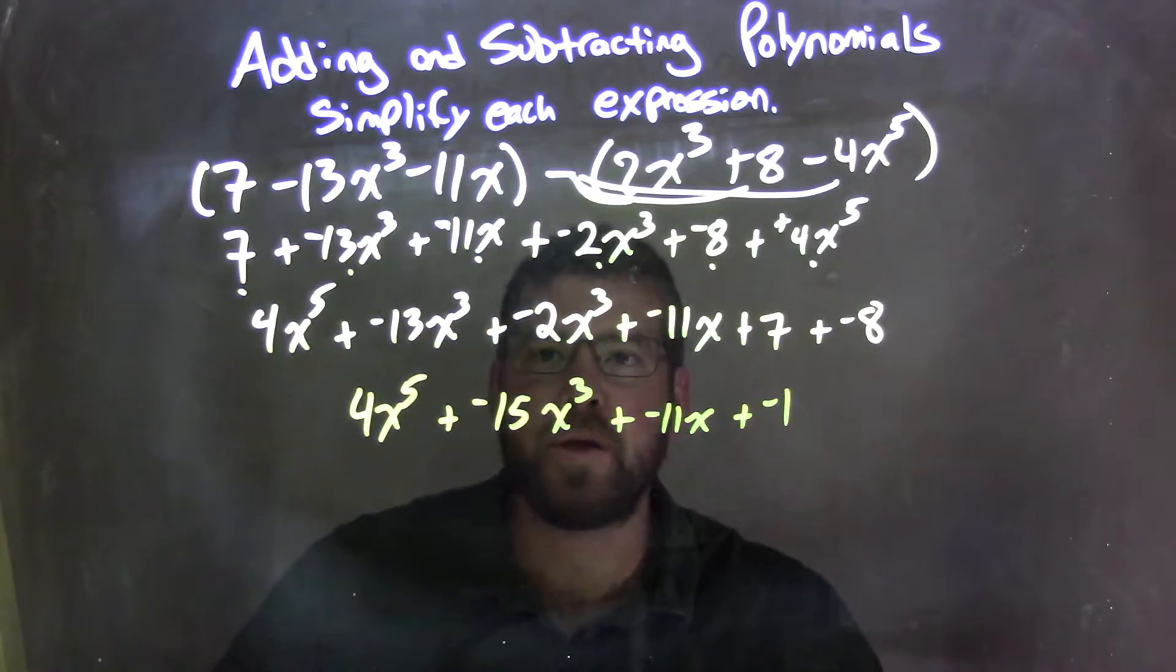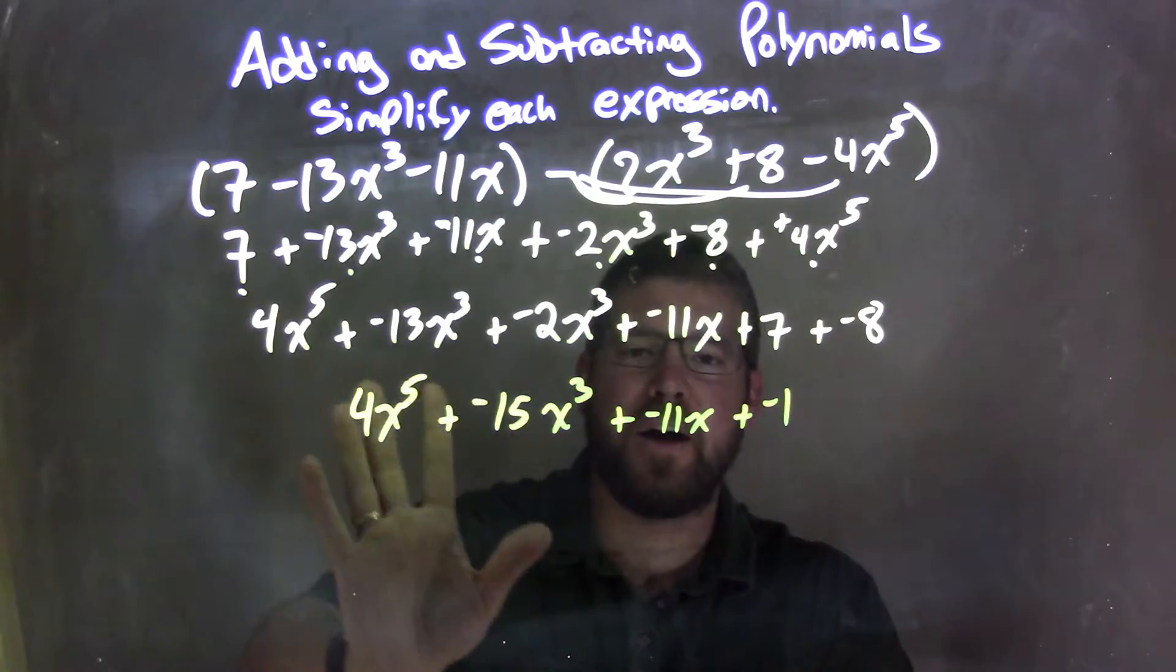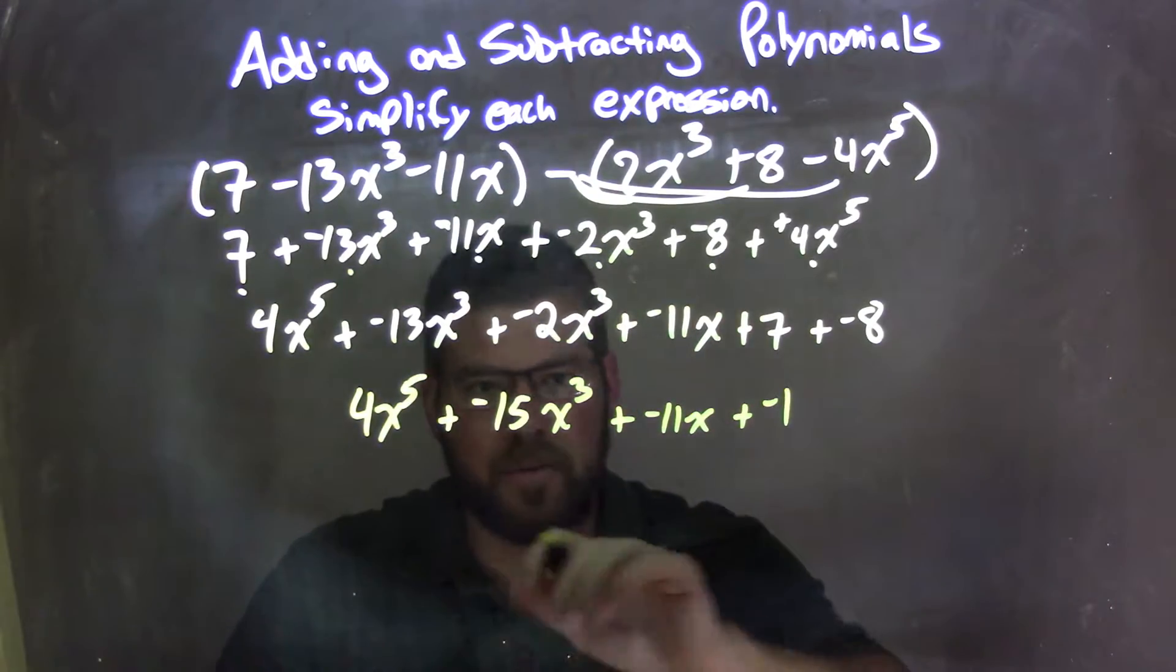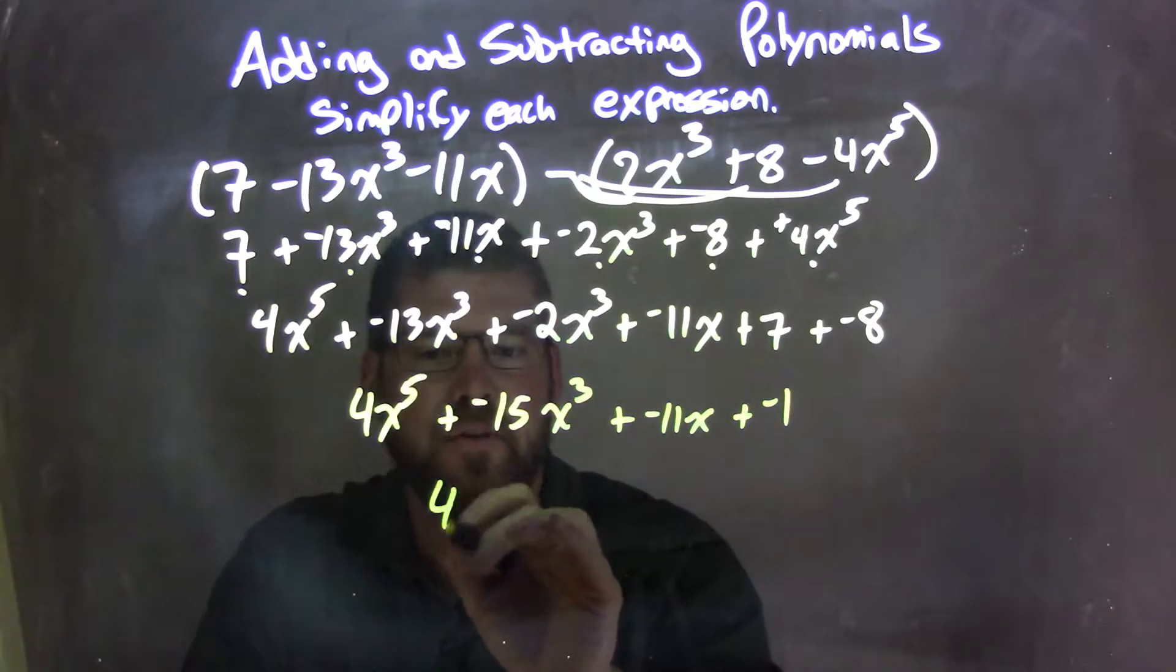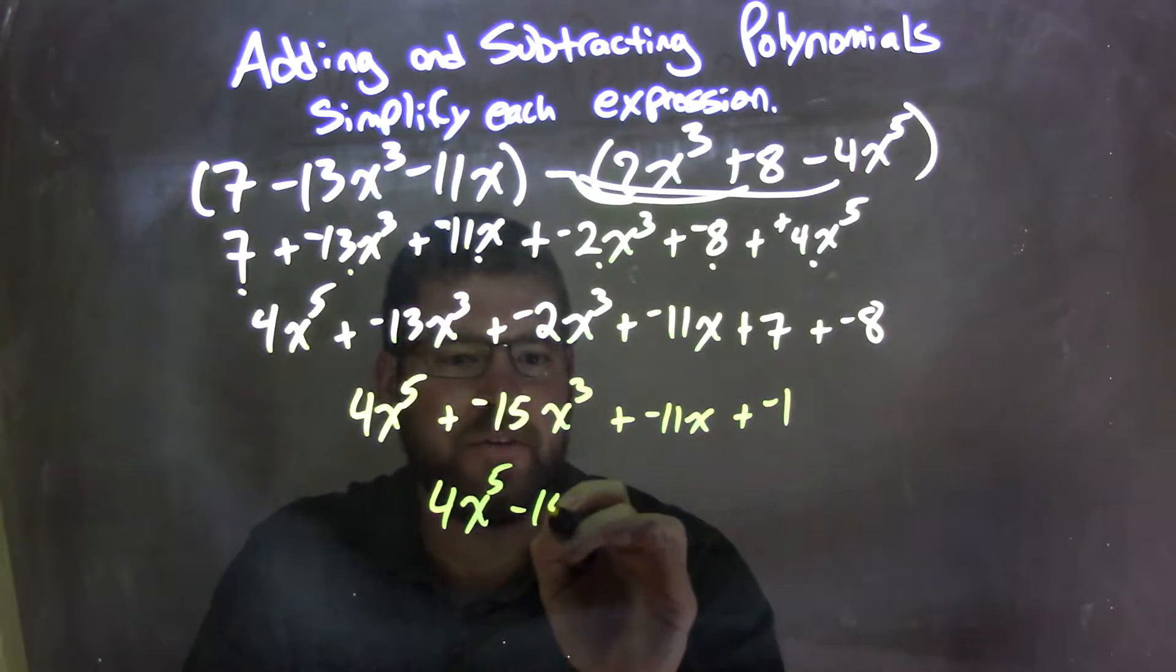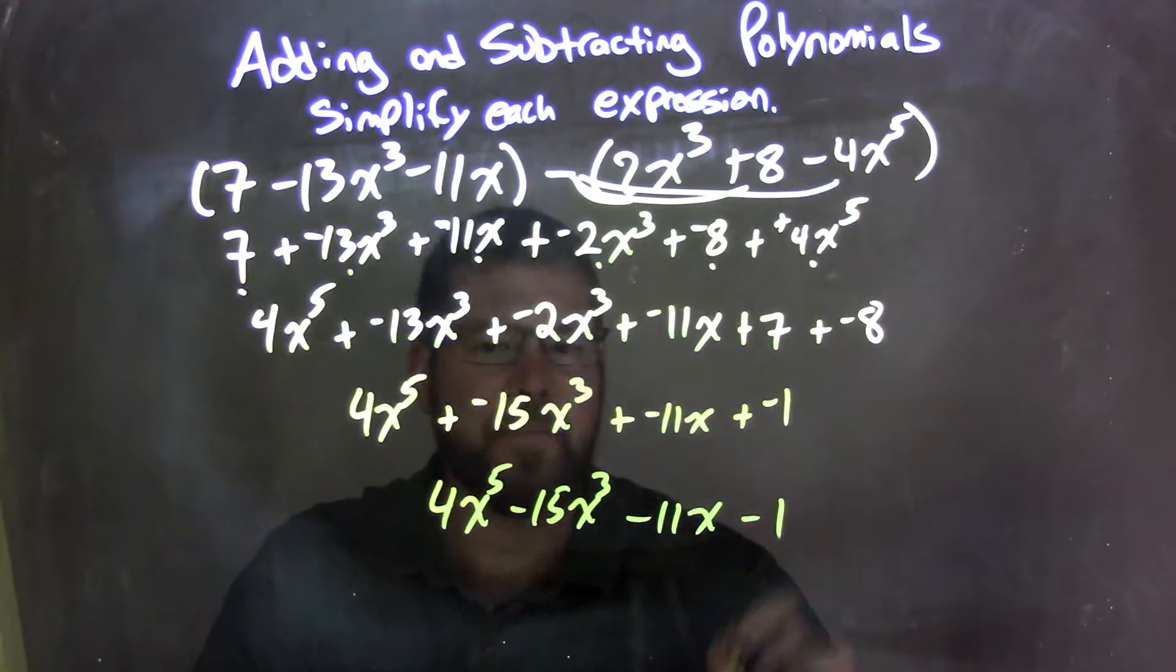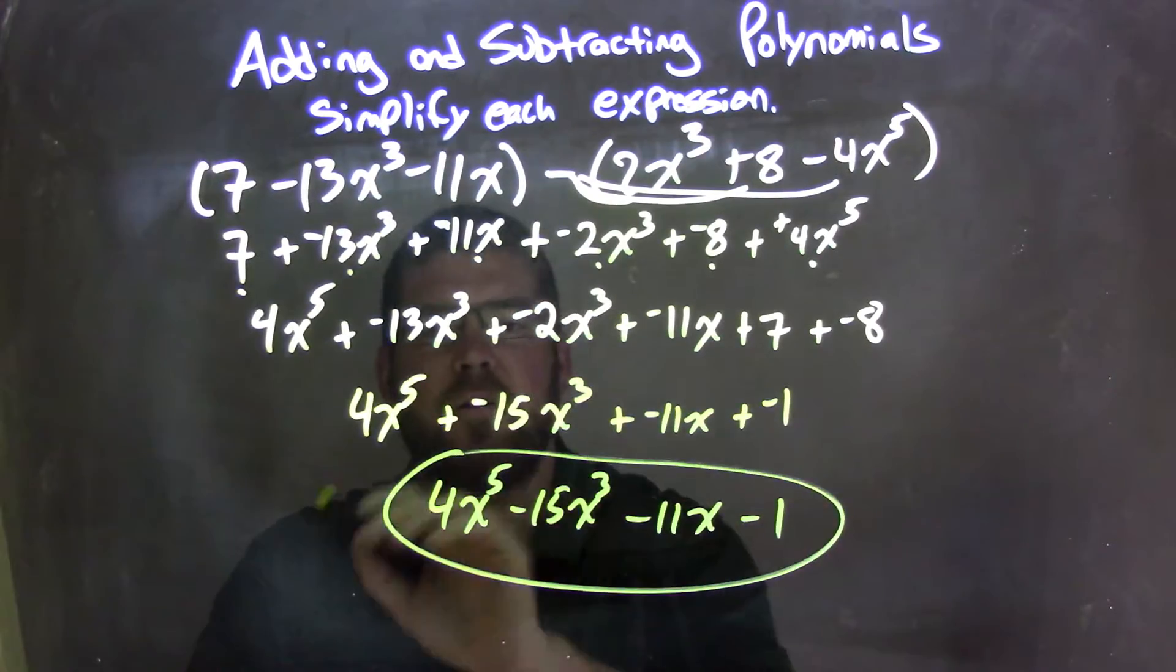Now I'm going to rewrite this though. Rewrite it to have, instead of adding a negative, subtraction for the final answer, kind of bring it back down with subtraction. So it's 4x to the 5th minus 15x to the 3rd minus 11x minus 1. And there we have it, there's our final answer here.